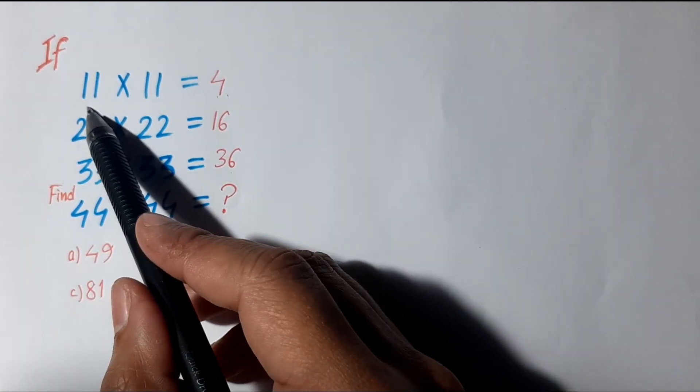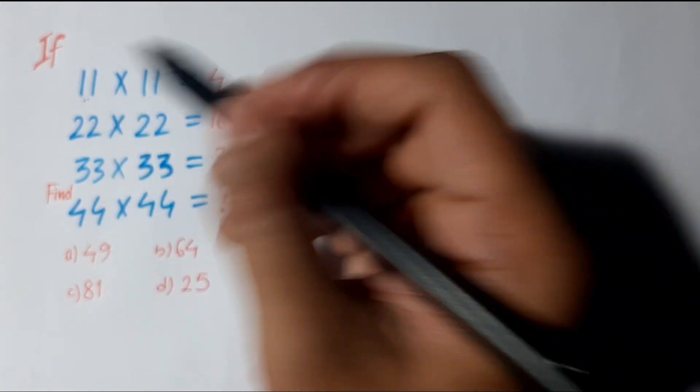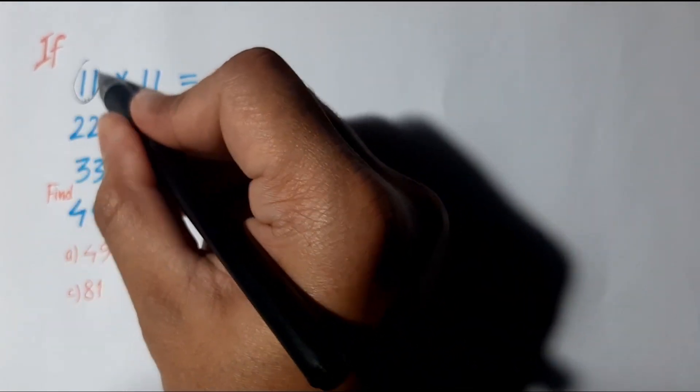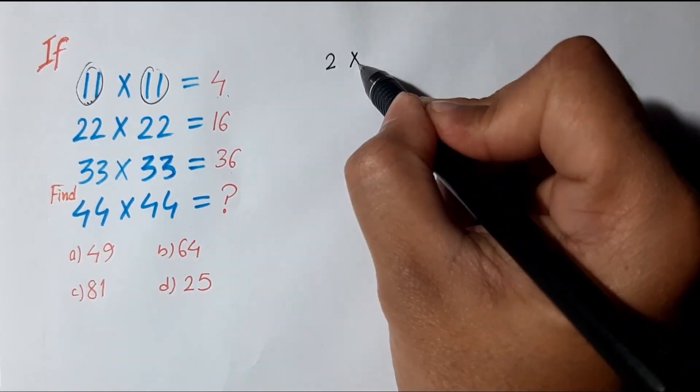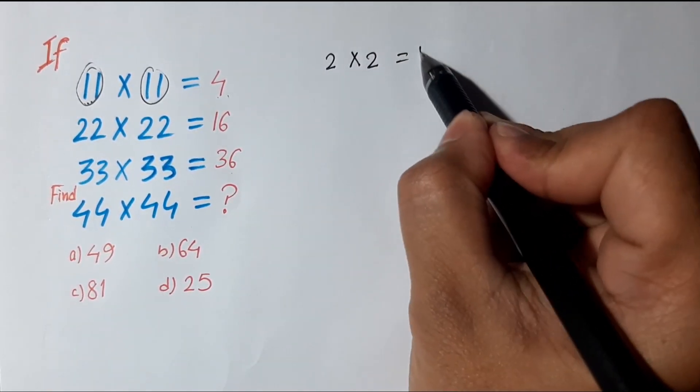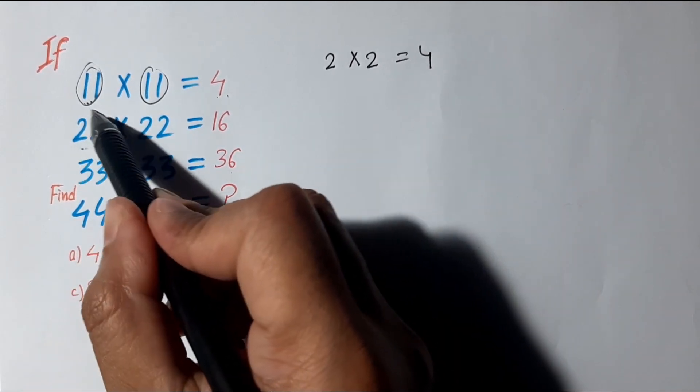To get 4, we add the digits: 1+1 = 2 for the first 11, and similarly 1+1 = 2 for the second 11. Then 2×2 = 4.